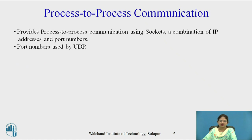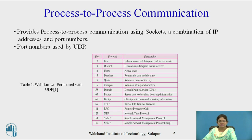First, process-to-process communication. UDP provides process-to-process communication using a socket and a combination of IP addresses and port numbers. Port numbers used by UDP are shown in this table. Here, a total of 14 ports are given, and each and every port is associated with a particular protocol.